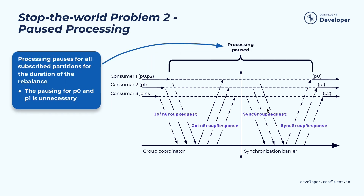The second issue is what we call paused processing. Since each consumer instance revokes those partitions immediately, the processing of all records for all partitions stops, and it only resumes once the new partitions have been assigned, which can take a little bit of time. At least in this case, the pausing for all the processing of records in partition zero and partition one is unnecessary because they are actually assigned back to the same consumer instance — they could have just continued processing during this rebalance process.